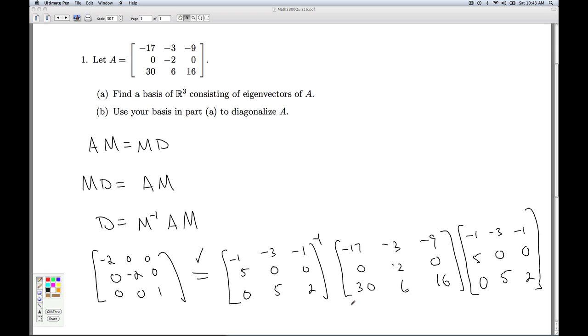Now I encourage you to think about this from a transformation point of view. And think about A being a representation of the transformation T from R3 to R3 given by T of X is A times X. A is the matrix representation in terms of the standard basis, E1, E2, E3.